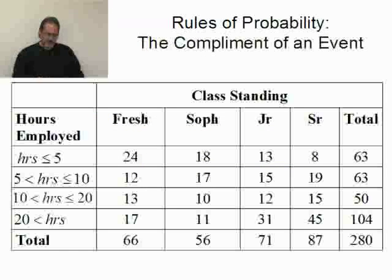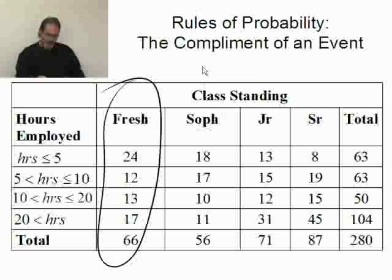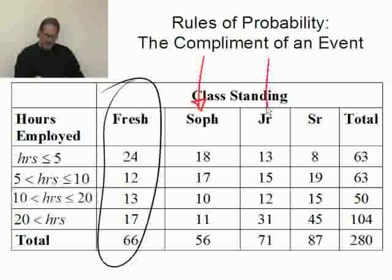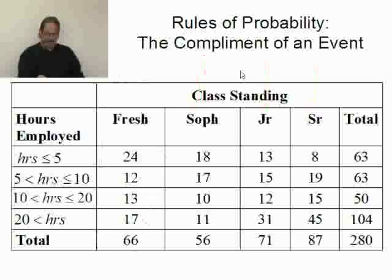So let's find a mutually exclusive event. If event A is freshman, I can actually see three mutually exclusive events. Sophomore is mutually exclusive — you can't be a freshman and a sophomore at the same time. Junior is mutually exclusive, and senior is mutually exclusive. In fact, when you have data in a table like this, all the columns will be mutually exclusive.